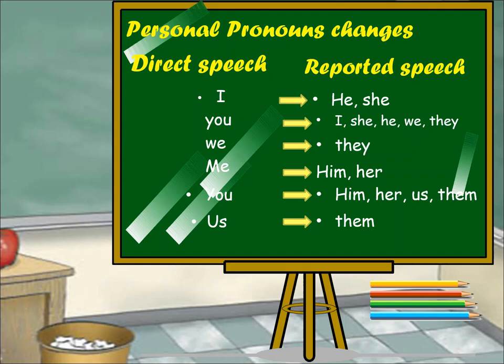For example: He said, 'I shall do my best.' In indirect speech, it becomes: He said that he would do his best. When we are changing from direct to indirect, the first thing we do is remove the commas and inverted commas, add 'that,' and then make certain changes.